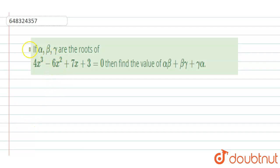Hello everyone. Our question is: if α, β, and γ are the roots of 4x³ - 6x² + 7x + 3 = 0, then find the value of αβ + βγ + γα.